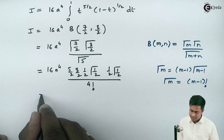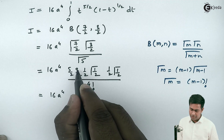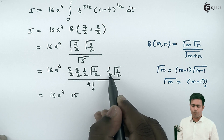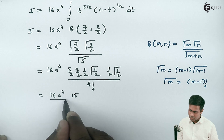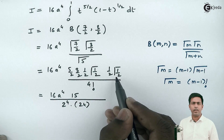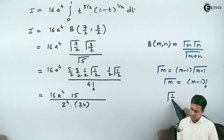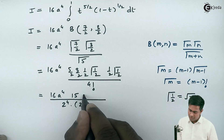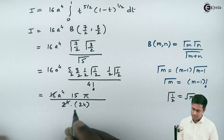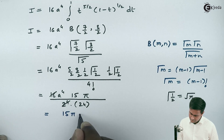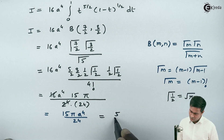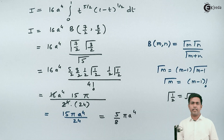So we get 16a raised to 4 times 5 times 3, which is 15, in the numerator. The four factors of 2 from the denominators give 2 raised to 4 in the denominator. 4 factorial is 24. Gamma(1/2) squared equals pi, since gamma(1/2) equals root pi. So the 16 and 2 raised to 4 cancel, giving us 15 pi a raised to 4 divided by 24, which simplifies to 5 pi a raised to 4 divided by 8. This is the value of the integration.